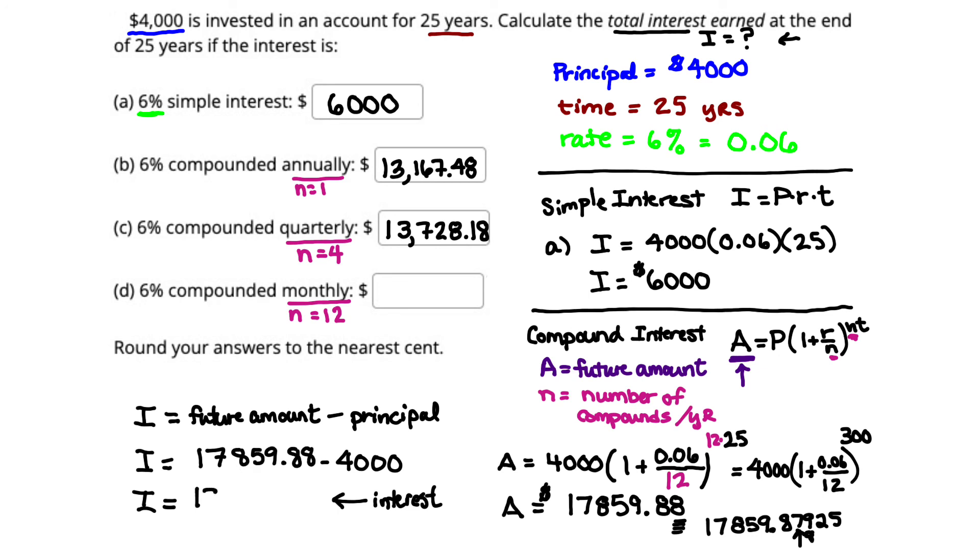We're going to subtract off the 4,000, and that's going to give us $13,859.88 for interest. And that fills in our last box, $13,859.88.